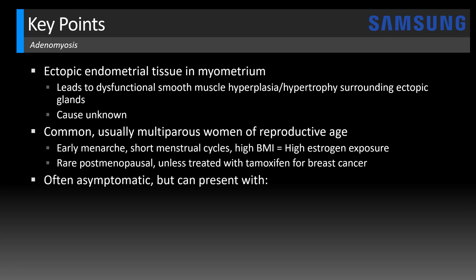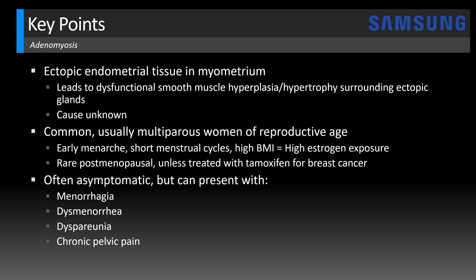Adenomyosis is often asymptomatic, but it can present with menorrhagia, which is abnormally heavy bleeding at menstruation; dysmenorrhea, which is painful menstruation; dyspareunia, which is painful intercourse; and also chronic pelvic pain.